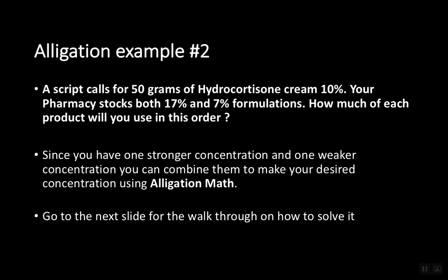Let's take a look at two more examples. Back to the original example — another script calls for 50 grams of hydrocortisone cream 10 percent, and the pharmacy has 17 percent and 7 percent. Once again, the pharmacy does not have the 10 percent cream, but we have two different concentrations — a high and a low. So we can combine them to make the concentration we want. That's allegation math.